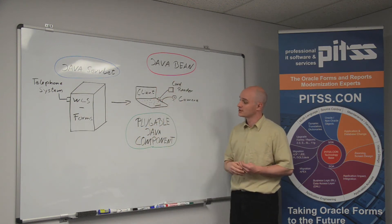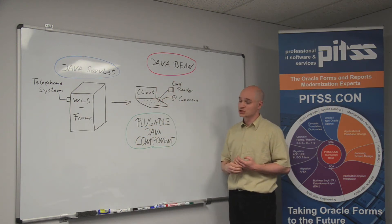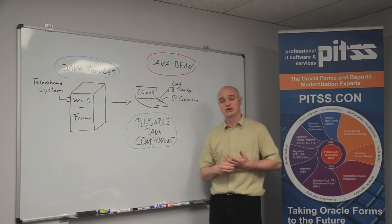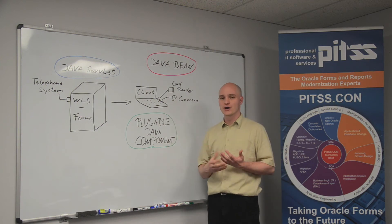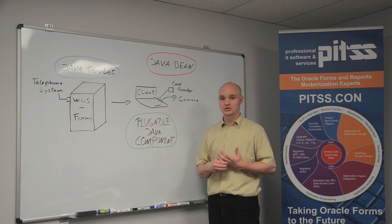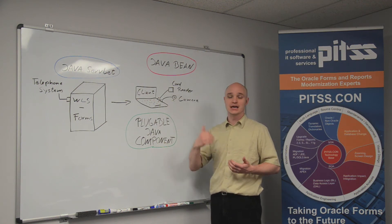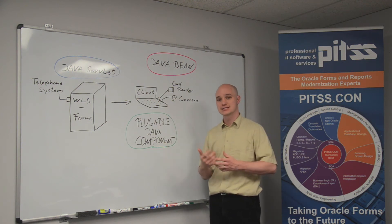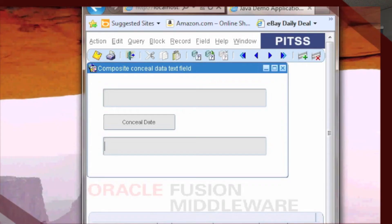The second option we have are Pluggable Java Components. Pluggable Java Components override the Oracle classes so you can create your own look and feel user interface on components that you have in Forms, like buttons, text items, radio groups, and so on. Here we have an example that is a text item that conceals the first 12 characters from your credit card number.